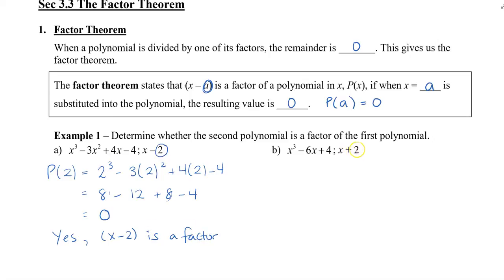Let's take a look at the second one. This time we have x plus 2 as our possible factor. Remember that in the theorem it says x minus a, so if we rewrote x plus 2, this would be x minus negative 2. Comparing to the theorem, our a value now has to be negative 2.